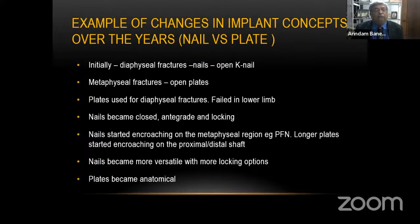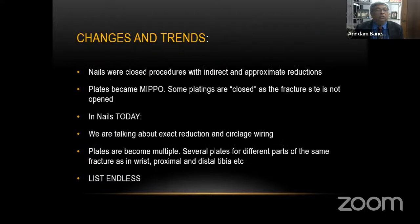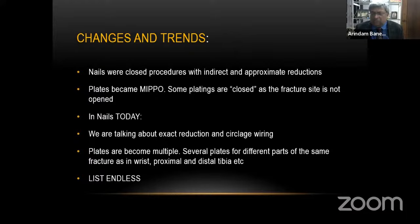Nails became more versatile with more locking options. Plates became anatomical. Nails were a closed procedure with indirect and approximate reductions. Plates started becoming MIPO — some platings were even done closed, as the fracture site was not even opened. And in nails today, we've gone back from indirect reduction to perfect reduction, circlage wiring, and plates have become multiple — we are using several plates for the same fracture, such as in the wrist and sometimes in the proximal and distal tibia.